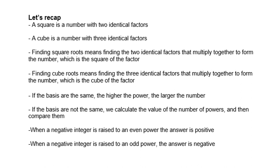Let's recap: a square is a number with two identical factors; a cube is a number with three identical factors. Finding square roots means finding the two identical factors that multiply together to form the number, which is the square of the factor. Finding cube roots means finding the three identical factors that multiply together to form the number, which is the cube of the factor. If the bases are the same, the higher the power, the larger the number. If the bases are not the same, we calculate the value of the powers and then compare them. When a negative integer is raised to an even power, the answer is positive; and when raised to an odd power, the answer is negative.